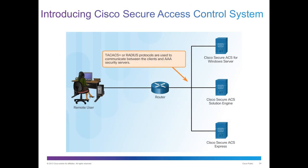The connection between the router and the directory services can use one of two protocols: RADIUS or TACACS+. This is how the router communicates with the directory services or secured service servers.